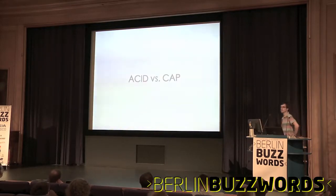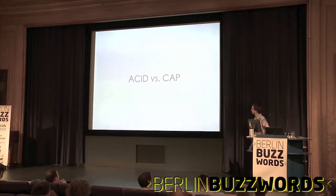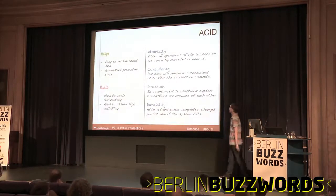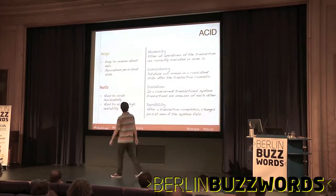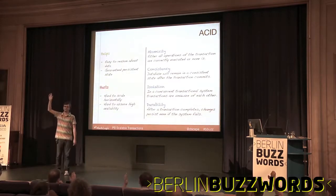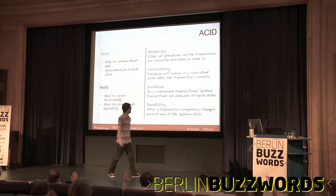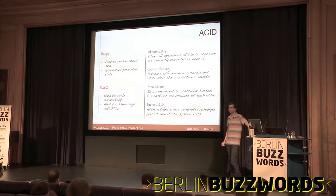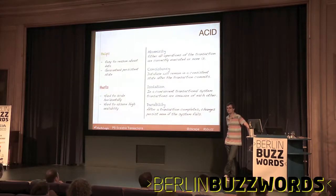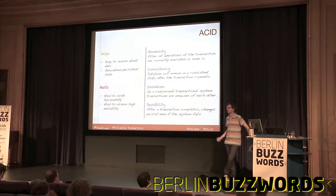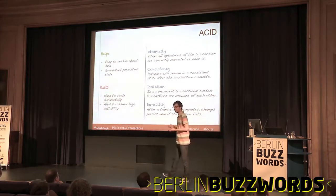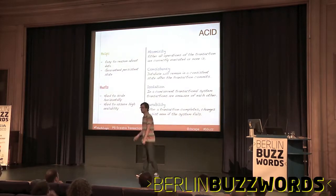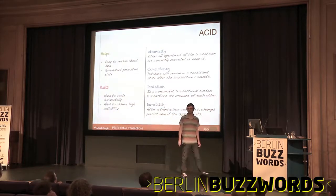Some definitions before we go on: ACID versus CAP. I have no interest in debating these topics — I just want to know the sense of the audience. Everyone knows what ACID is? The bottom line is that people forgot that ACID is a good thing if you can pull it off. If you can pull it off, it really makes it easy to develop — you don't have to think about consistency, these things are supposed to be guarantees. For developers that's a good thing. The bad things are: how do I scale it horizontally? How do I make sure it's highly available? Those are the more complicated things about ACID.